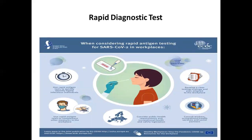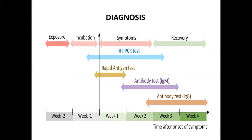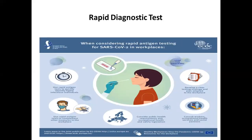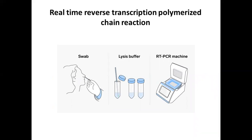The rapid diagnostic test can be done for patients with symptoms of less than one to two weeks, though it has low sensitivity and specificity. The real-time reverse transcription polymerase chain reaction (RT-PCR) test involves taking a sample from the oropharynx or nasopharynx of the suspected patient. The sample is subjected to lysis buffer, run through the RT-PCR machine, and if any viral particles are present, they will be amplified, confirming COVID-19.